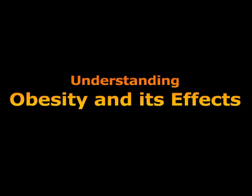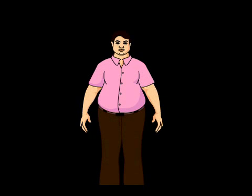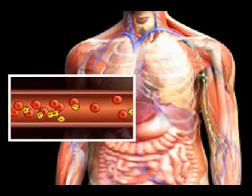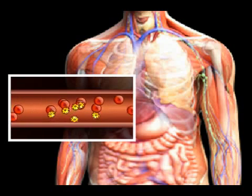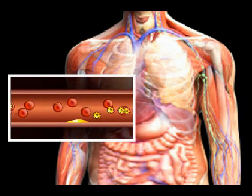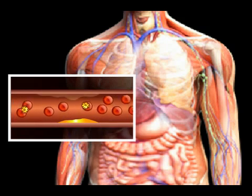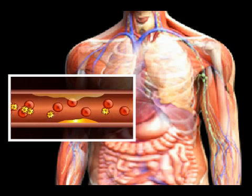Understanding obesity and its effects: obesity is a condition where a person has an excess of body fat, making people more susceptible to cardiac diseases. A normal healthy person usually has 30 to 35 billion fat cells.